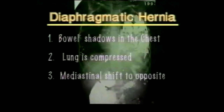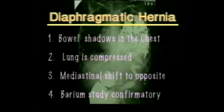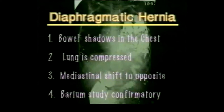This barium meal X-ray shows intestinal coils filled with barium in the left hemithorax — a diaphragmatic hernia. The radiological features of diaphragmatic hernia are: presence of intestinal coils in the chest, compression of the lung, and shift of the mediastinum to the opposite side. A barium study is confirmatory.